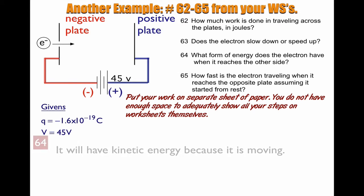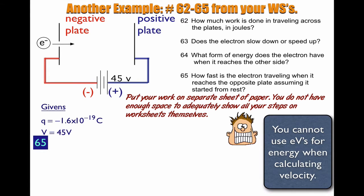65. How fast is the electron traveling when it reaches the opposite plate, assuming it started from rest? So remember, when doing this calculation, you cannot use the eVs. It's 45 eVs, but that's not helpful. You've got to put it in joules.